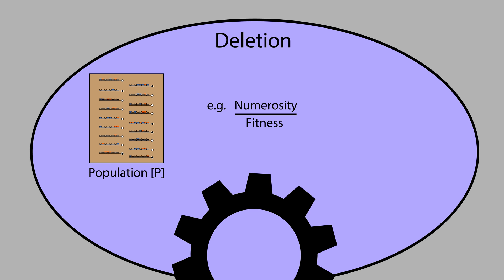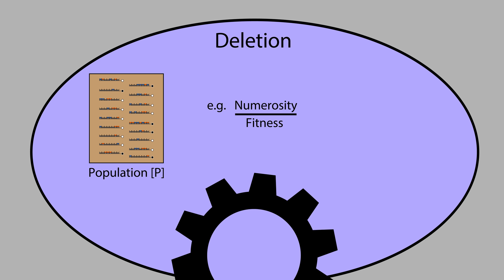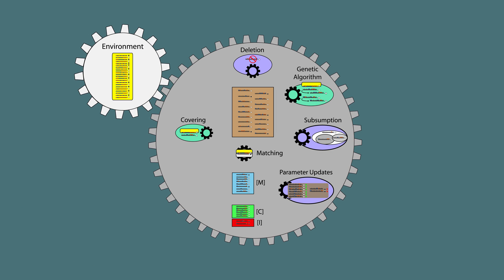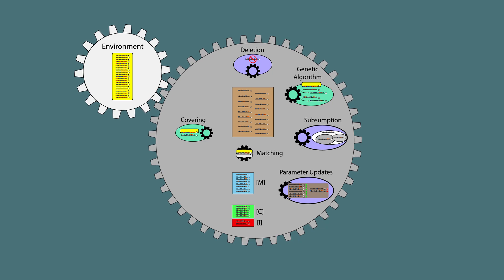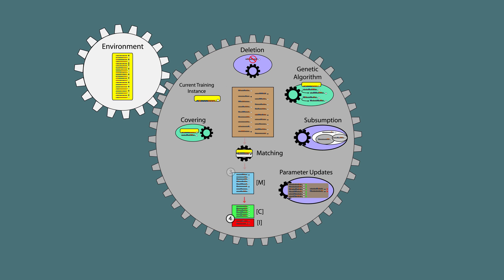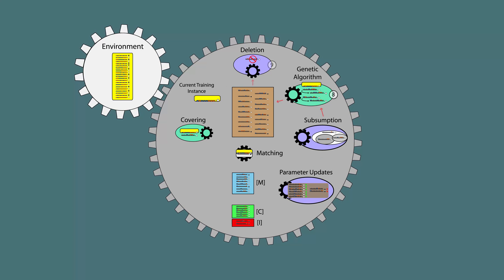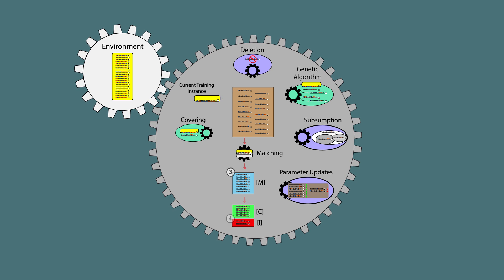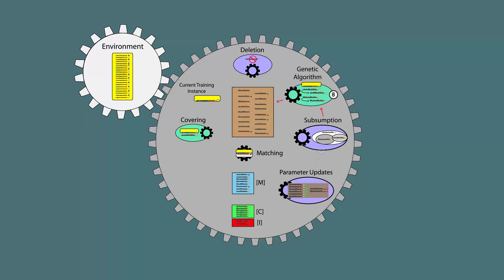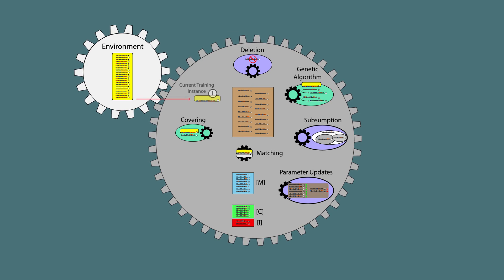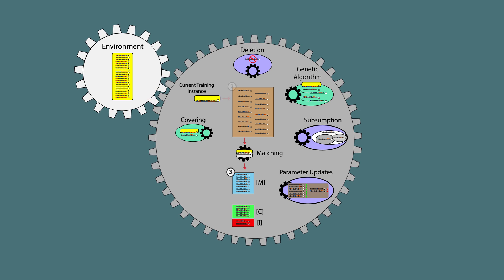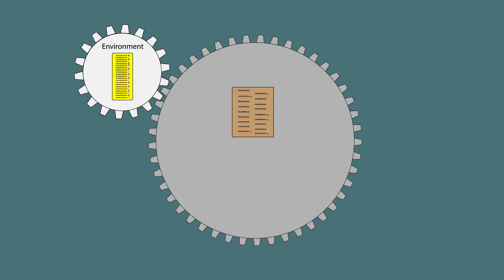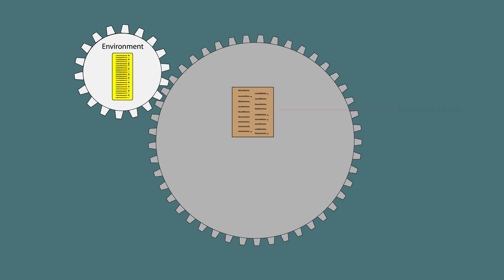This keeps the population from being overrun by just a few rules with large numerosities. Stepping back, we can see this learning cycle in action. Each iteration, new rules are discovered. Some rules gain experience by matching the new training instance, and evolutionary pressures in the system encourage the fittest rules to reproduce while eliminating the least fit. Once the last learning iteration is reached, the resulting rule population can be applied as a model.